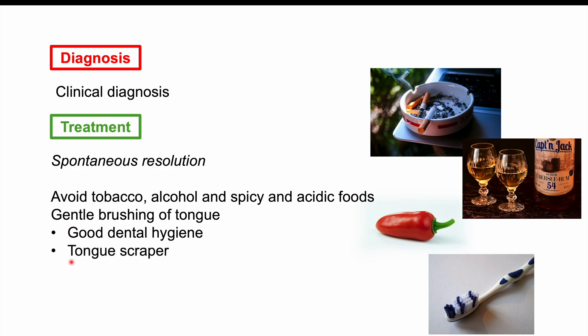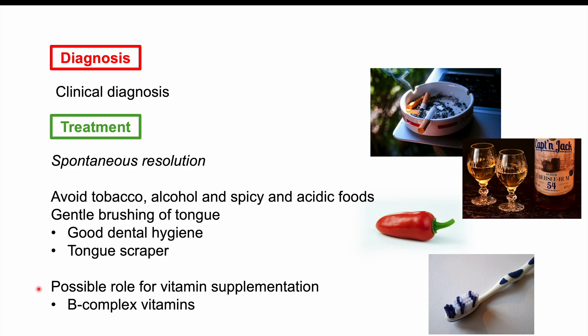A tongue scraper can also work — again, be gentle so as not to irritate the tongue further. Given the potential role of vitamin deficiencies, taking B-complex vitamins may be important. Even taking a multivitamin is worth considering, as other deficiencies beyond B vitamins may increase risk. Making sure you are not deficient in iron is also important, as iron deficiency may irritate the mouth and tongue. Vitamin B12 is also something to consider.